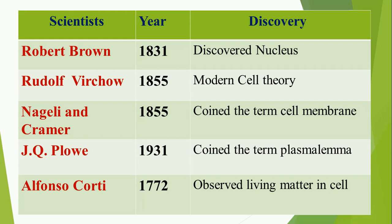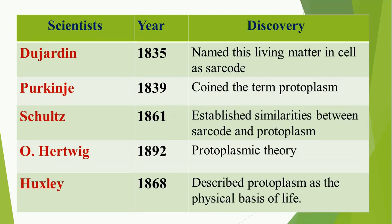Nageli and Cramer coined the term 'cell membrane' in 1855. Ploew in 1931 coined the term 'plasmalemma.' In 1772, the first living matter in the cell was observed by Alfonso Corti; Dujardin in 1835 named this living matter 'sarcode.' Purkinje in 1839 coined the term 'protoplasm.' Schultz in 1861 established similarities between sarcode and protoplasm. Finally, Hertwig in 1892 came out with the protoplasmic theory, and between this period, Huxley in 1868 described protoplasm as the physical basis of life. This is all about the story of protoplasm.